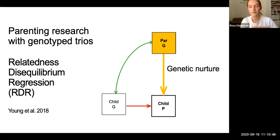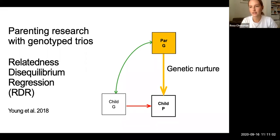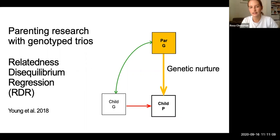We know it's through the environment because we've controlled in this method for genetic variation transmitted to the child and acting directly on the child phenotype. By 'direct,' I mean that the genetic effect stems from the child's own inherited variation acting on their own trait rather than stemming from their parents' genotype. A direct genetic effect can still be mediated through the environment, especially for something as complex as anxiety and depression.